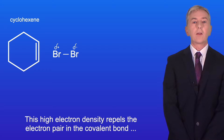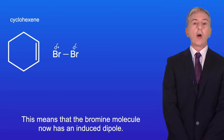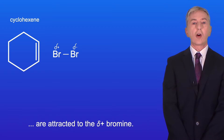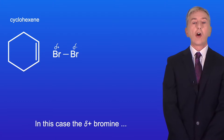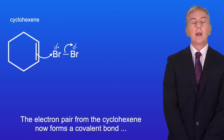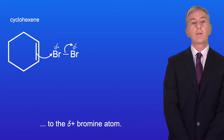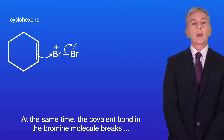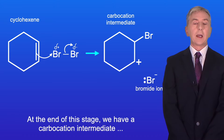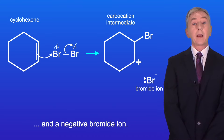This high electron density repels the electron pair in the covalent bond of the bromine molecule, and this means that the bromine molecule now has an induced dipole. The pair of electrons in the pi bond of the alkene are attracted to the delta positive bromine, so in this case the delta positive bromine is acting as an electrophile. The electron pair from the cyclohexene forms a covalent bond to the delta positive bromine atom. At the same time, the covalent bond in the bromine molecule breaks and the pair of electrons move on to the delta negative bromine atom. At the end of this stage we have a carbocation intermediate and a negative bromide ion.